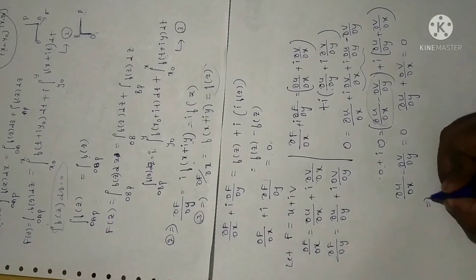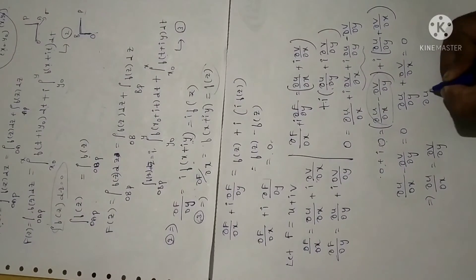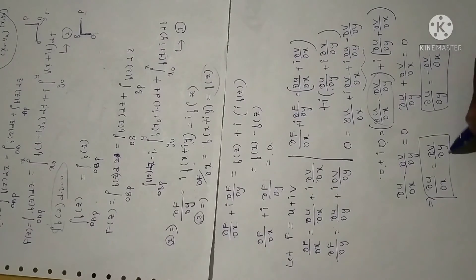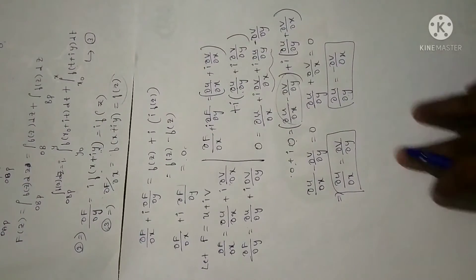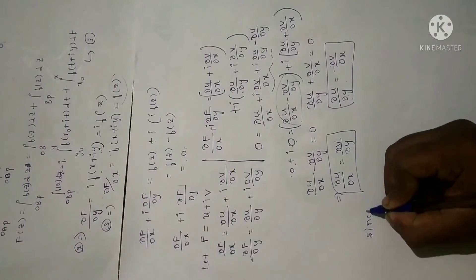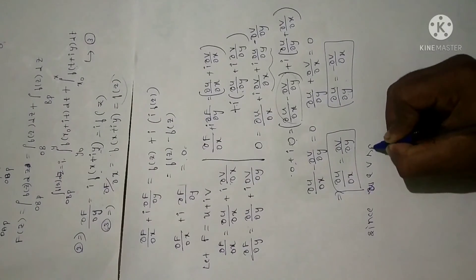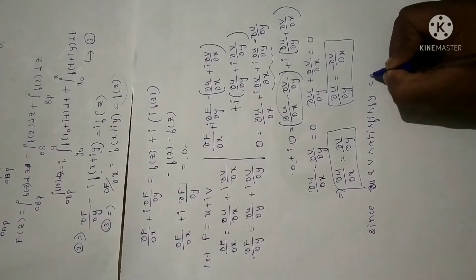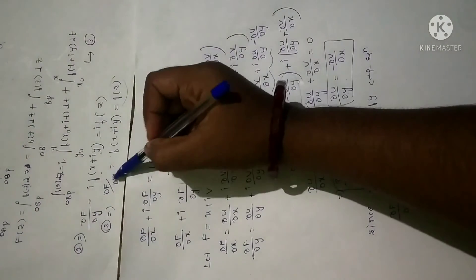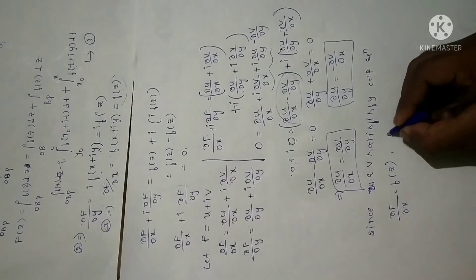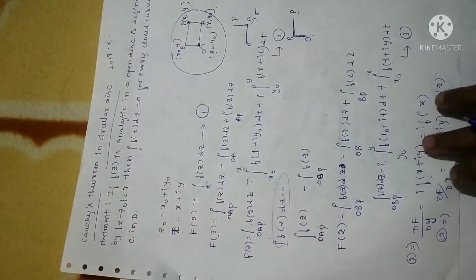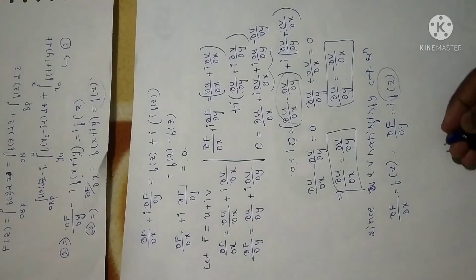From these two equations we get ∂u/∂x = ∂v/∂y and ∂u/∂y = −∂v/∂x, which are precisely the Cauchy-Riemann equations. So u and v satisfy the Cauchy-Riemann equations. Also, ∂F/∂x = f(z) and ∂F/∂y = i·f(z). Since f(z) is given to be analytical and continuous, all partial derivatives exist.